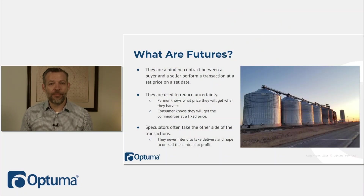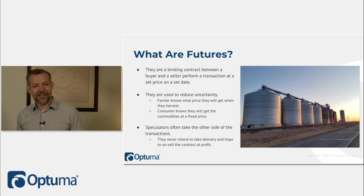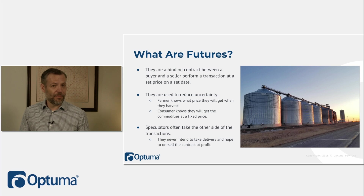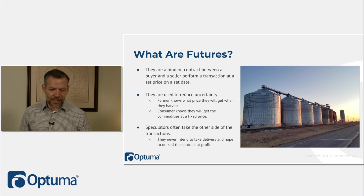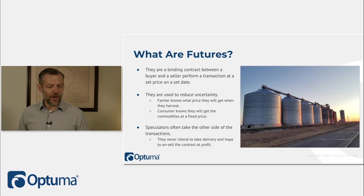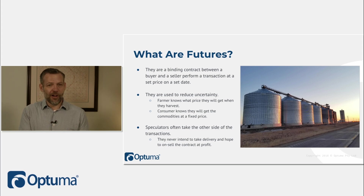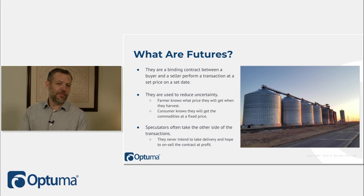Futures are binding contracts between a buyer and a seller to perform a transaction at a set price on a set date. This all started way back in the Dutch markets with tulip bulbs — one of the reasons tulip bulbs went through a major boom and then bust, because this new instrument was being written. It allowed a farmer to say: I'm planting wheat or corn, and I want to lock in a price now, worried that prices will drop when everyone else starts harvesting. So they would lock in a futures contract.